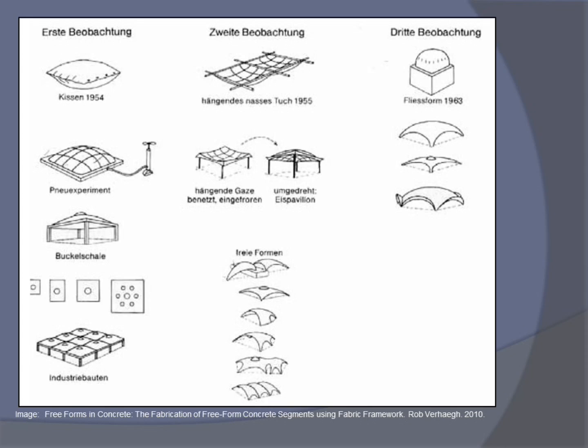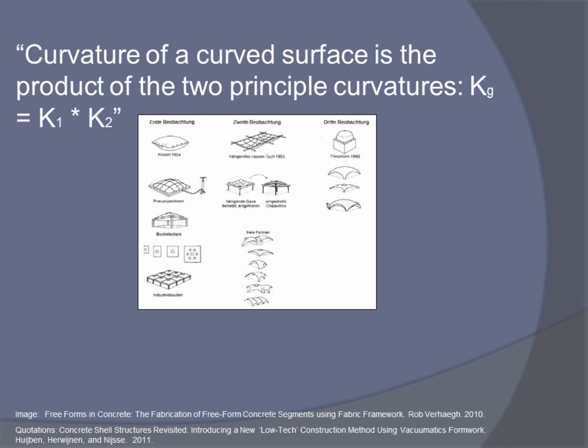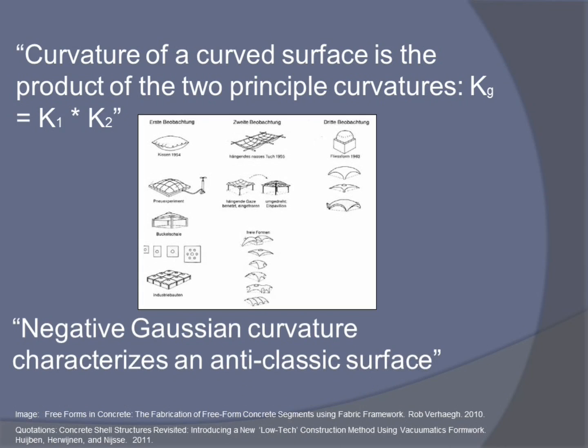If you've tried to research the topic, you may run across cases where you're reading a translated article from German or Dutch into English, and you run across diagrams where the article has been translated but the diagrams — the real meat — haven't been translated. Or, once you get past that, you run into quotes like: 'curvature of a curved space is the product of two principles, Kg equals K1 times K2,' or 'negative Gaussian curvature characterizes an anti-classic surface.' That's all great, but it's a lot of math, and these two quotes are actually from the easiest article I found — on vacuumatic formwork.